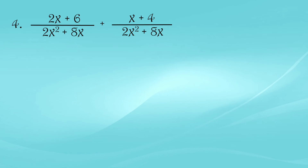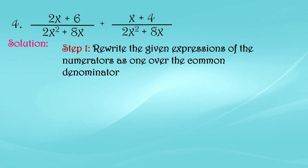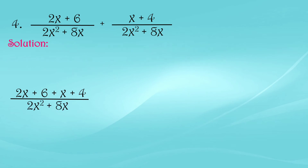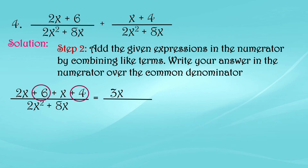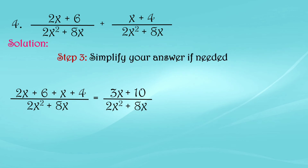Example 4: (2x + 6) over (2x² + 8x) plus (x + 4) over (2x² + 8x). Step 1 — rewrite: (2x + 6 + x + 4) over (2x² + 8x). Step 2 — combine like terms: 2x + x = 3x and 6 + 4 = 10. So numerator is 3x + 10. Step 3 — simplify: the denominator factors as 2x(x + 4), but the numerator cannot be simplified further. Final answer: (3x + 10) over 2x(x + 4).